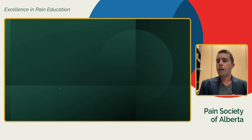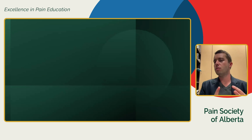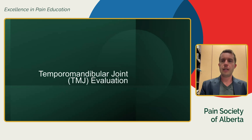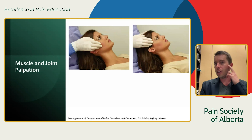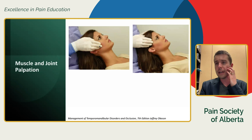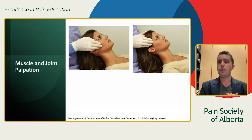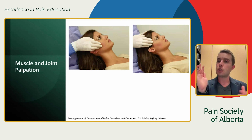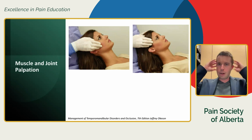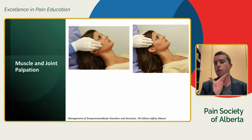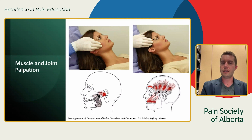How do we diagnose TMD? Your clinician — physician, physio, or dentist — will first perform an interview: where does it hurt, when, what makes it better or worse? Clinically, a TMJ evaluation involves palpation — feeling the muscles and joints. For the masseter, they may have the patient clench and relax while applying pressure. Minor discomfort is not concerning, but moderate pain — four to six out of ten — is a cause for concern. They'll also palpate the temporalis and other accessory muscles.